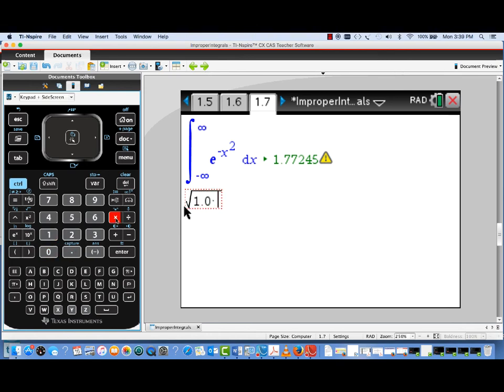Now, to make it give us a decimal number, I'm going to actually put in 1.0 times pi, take the square root, hit enter, and see that the result we got is very, very close indeed, even though it gave us that warning symbol.